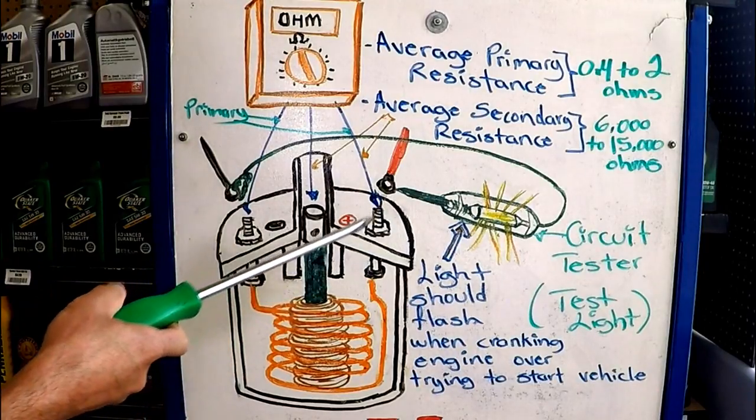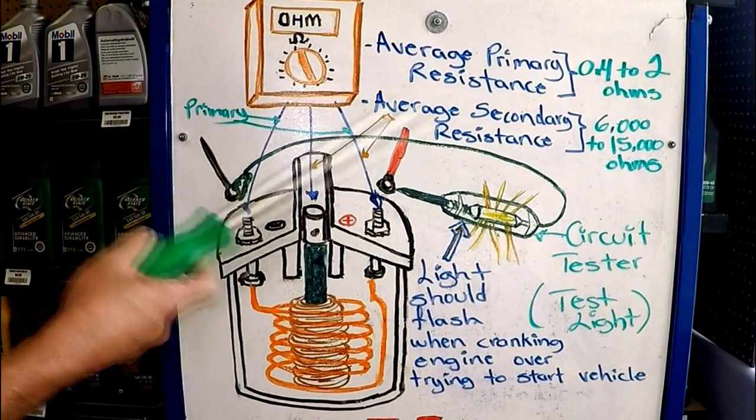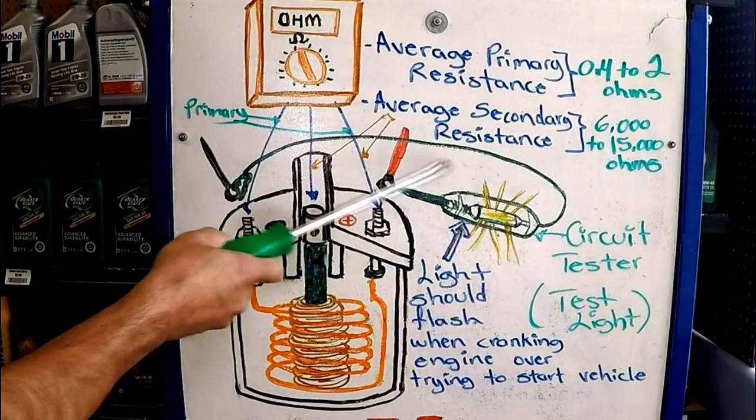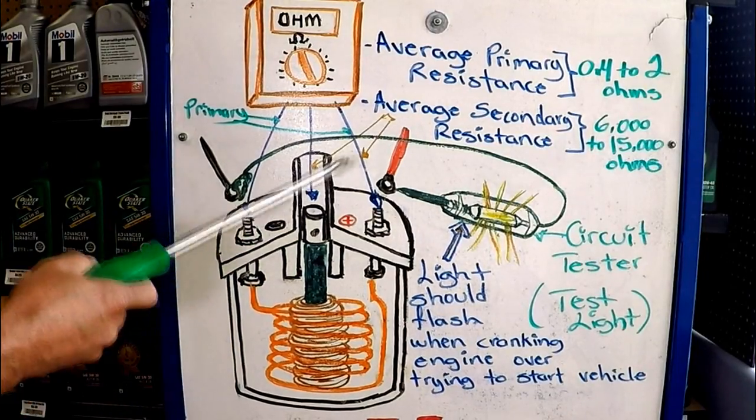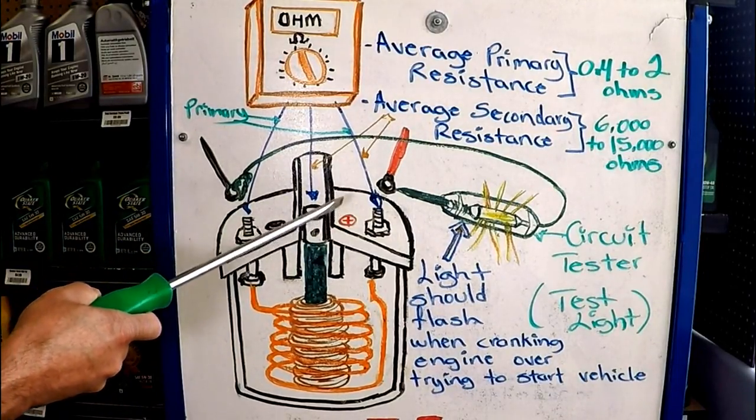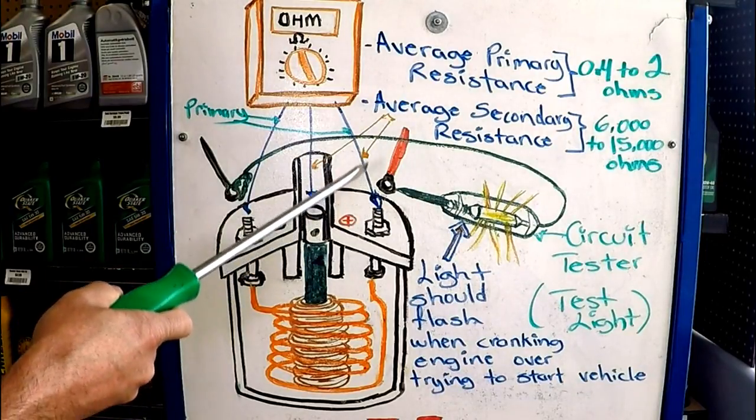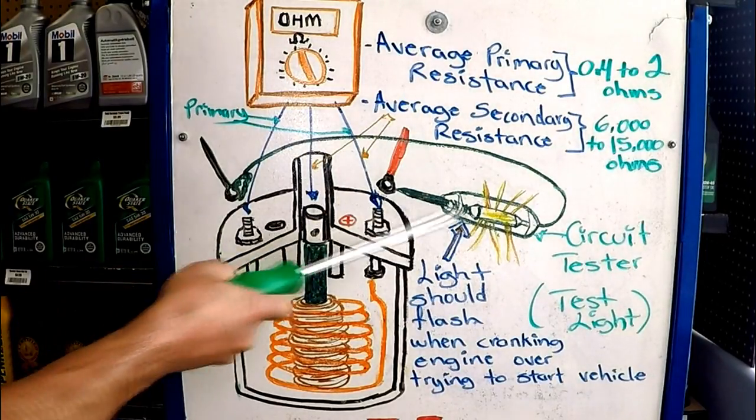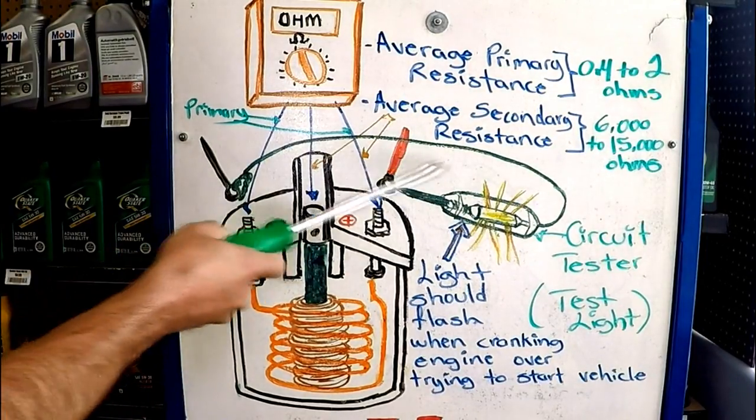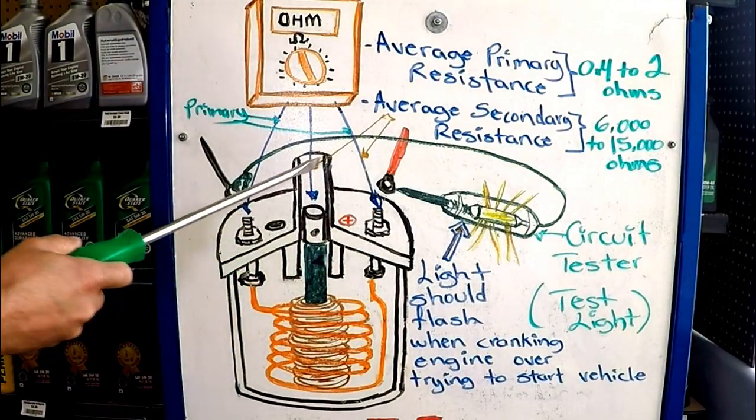Now let's go on a different scenario. Let's say you don't own an ohmmeter, you don't want to go buy one. You do have a test light, and that's checking okay, but you still don't know if you have a weak coil or not. But you do have a spark tester. So you already used the test light and it is getting the signal on and off.